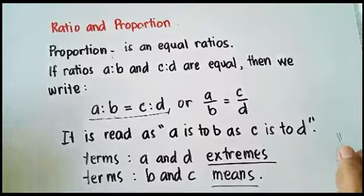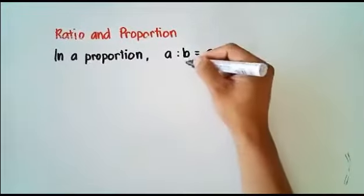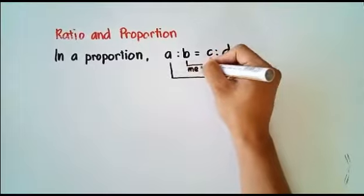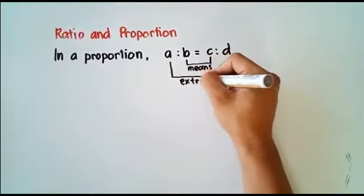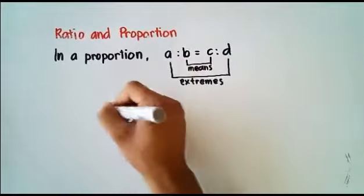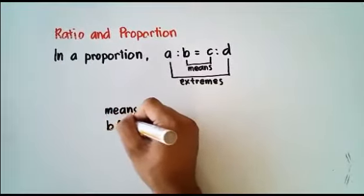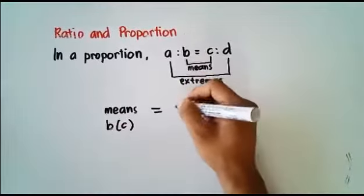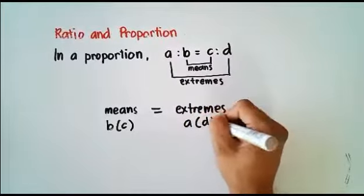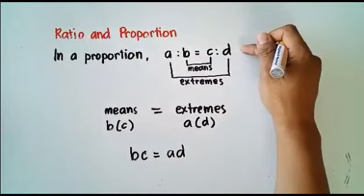These are the two types of terms in a proportion. In a proportion A is to B as C is to D, B and C are means and A and D are extremes. For us to say that these ratios are proportioned, we multiply our means: the product of the means, B times C, should be equal to the product of the extremes, A times D. So B times C equals A times D for the ratios to be proportioned.